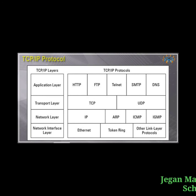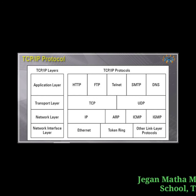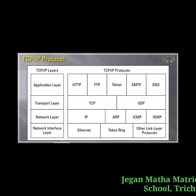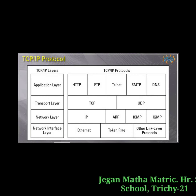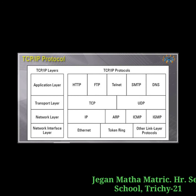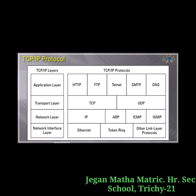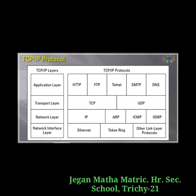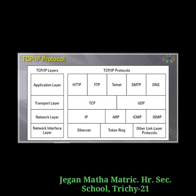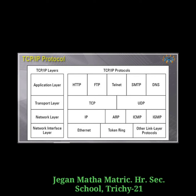The transport layer is where sessions are recognized and data packets are swapped between hosts. Two main protocols are used: TCP — Transmission Control Protocol — provides a reliable, connection-oriented transmission between two hosts and ensures delivery of packets. UDP — User Datagram Protocol — provides connectionless, unreliable, one-to-one or one-to-many delivery.